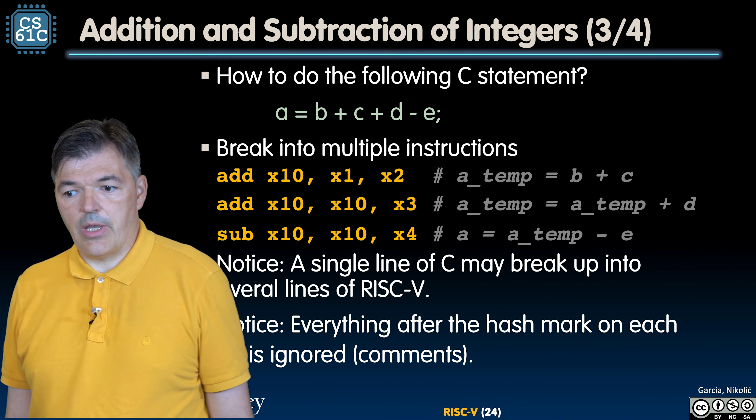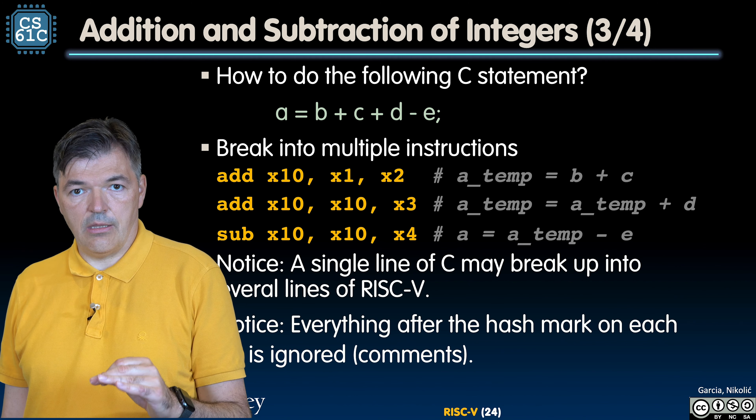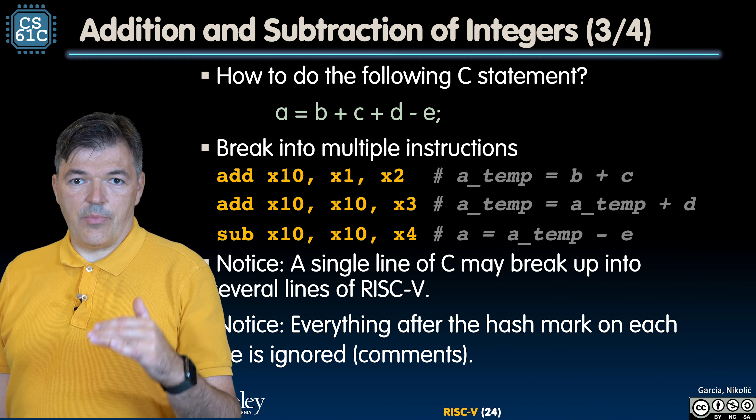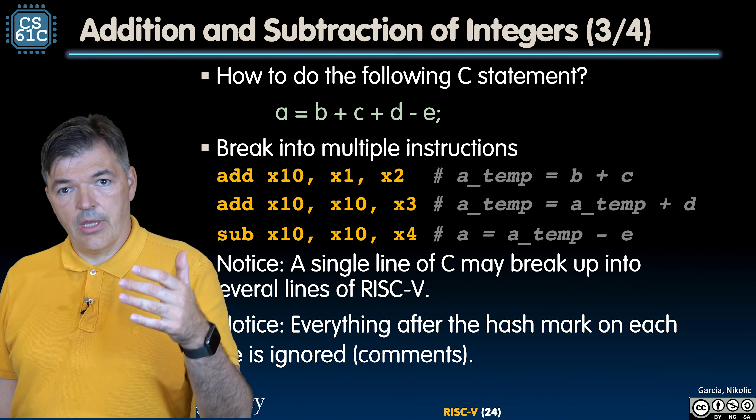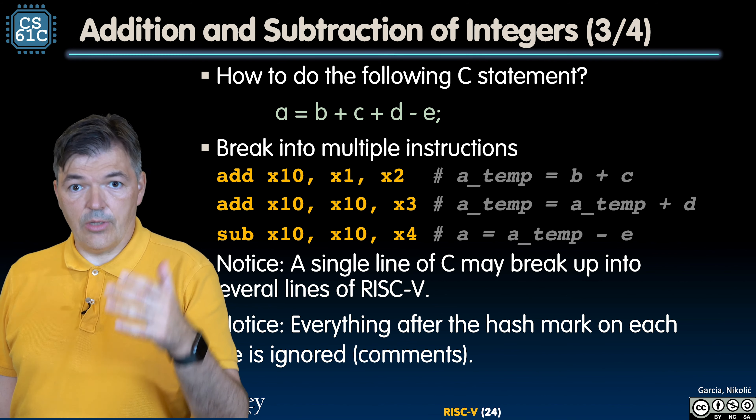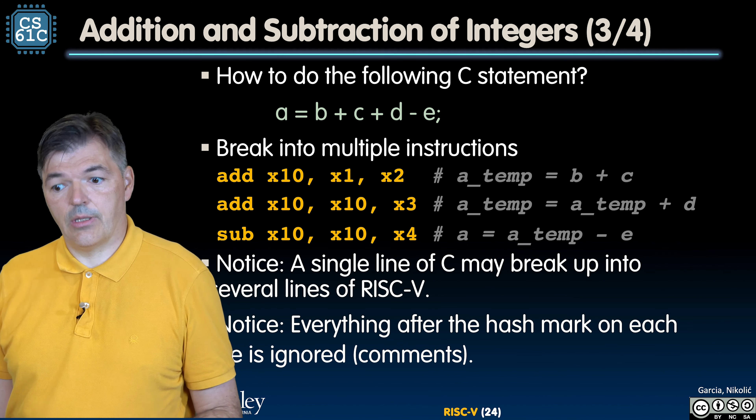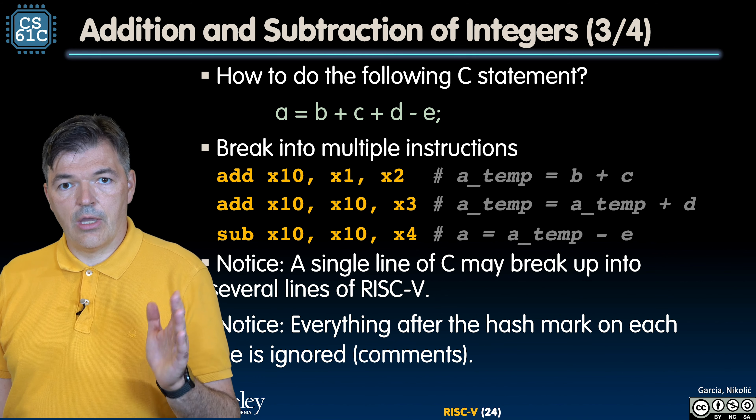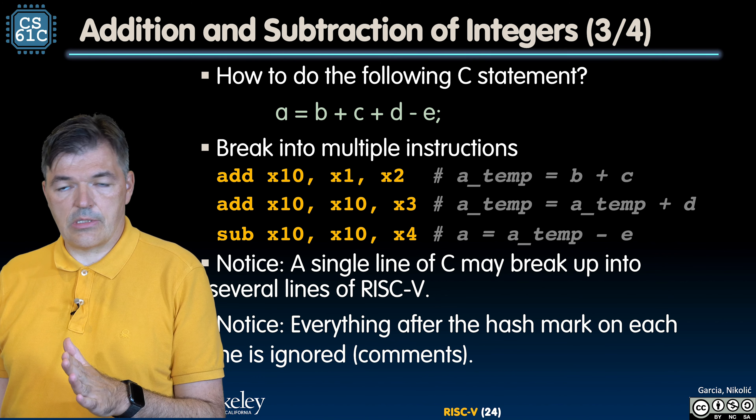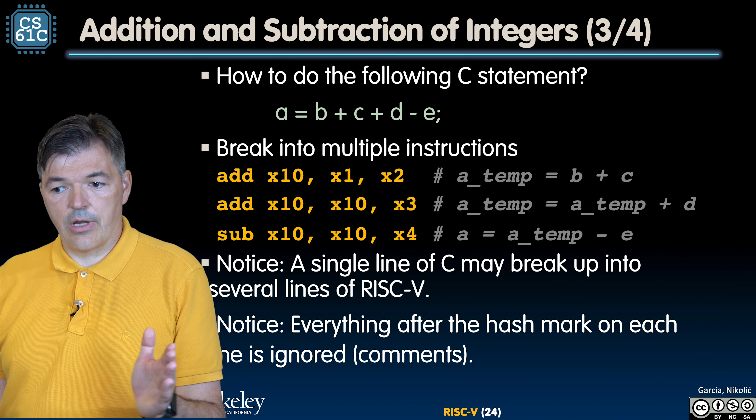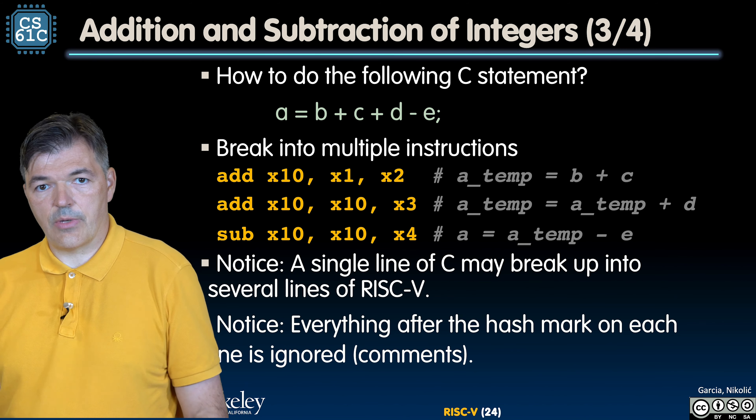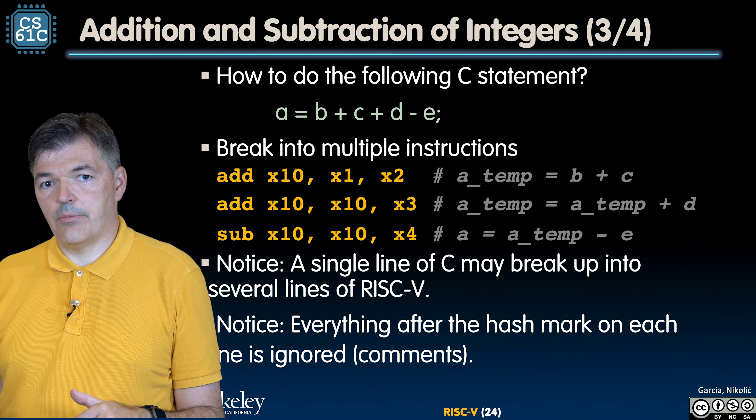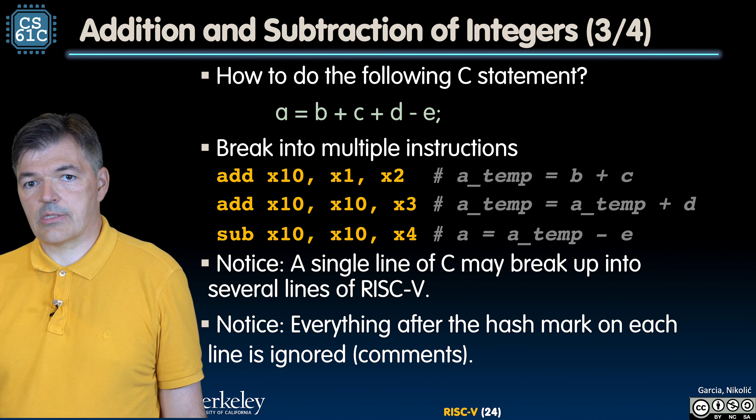Things to keep in mind: a single line of higher level language like C can break up and often will compile to multiple instructions or several lines of RISC-V assembly code. And notice, as we have seen before, everything that goes after the hash mark in each line is not being compiled by the compiler. Those are just comments.